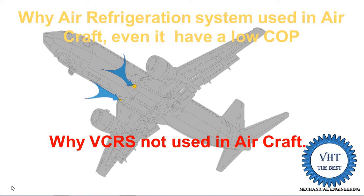In this video, we discuss why the air refrigeration system is used in aircraft even though it has a low COP, and why the VCRS system is not used. The air refrigeration system has a COP less than one, while the VCRS system has a COP greater than one. So VCRS has better performance, but it is not used in aircraft, while the air refrigeration system, despite its lower COP, is used. We will study the different reasons why.